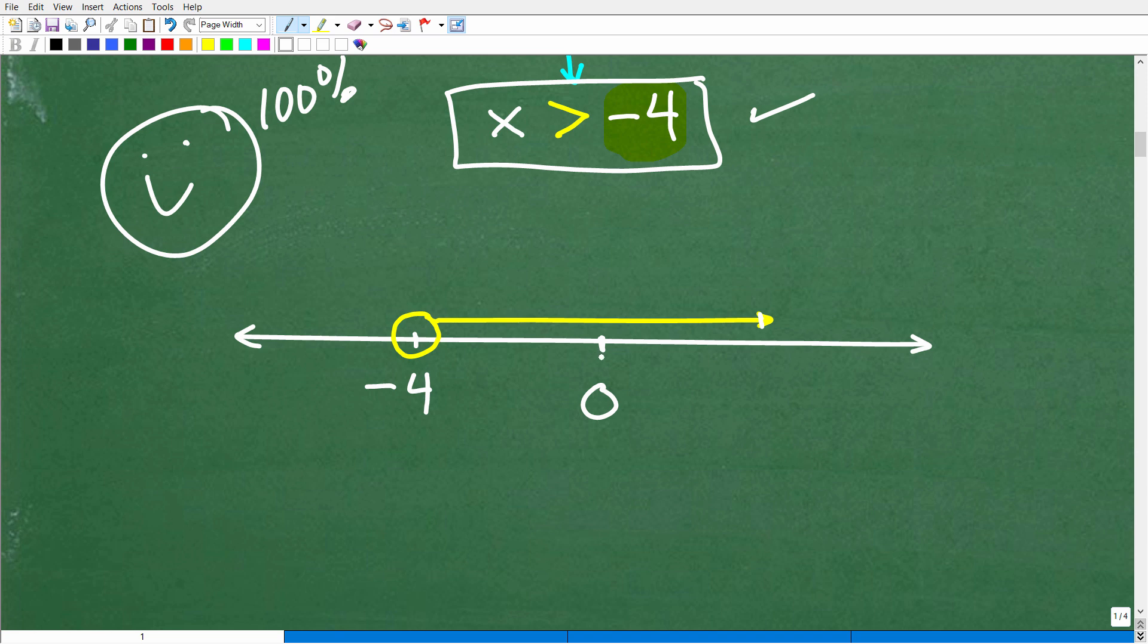So, if you might be confused, you're like, 0 greater than negative 4? Well, try a number over here. Is 5 greater than negative 4? Yes, for sure. So, these numbers over here to the right of negative 4 are greater than negative 4. So, that's the direction of your arrow.